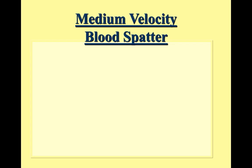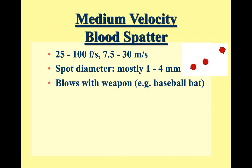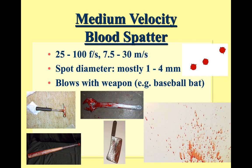Medium velocity blood spatter is anywhere from more than five up to 100 feet per second. Because the blood is going faster, it needs less weight to break free from surface tension due to the added force of movement, so you get less than 0.05 mils of blood and therefore a smaller spot. This velocity typically comes from the actual impact of a weapon — hitting somebody with a baseball bat, hammer, wrench, or cleaver — not the cast off as you swing. The spots are smaller but you can still analyze angles of impact to figure out where the blood came from.